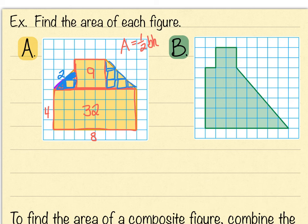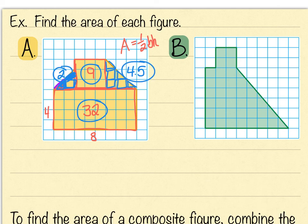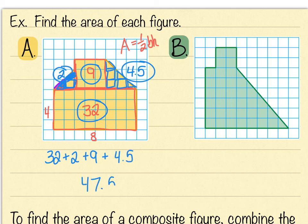Adding all the areas: 32 squares plus nine squares plus two more squares plus four and a half squares. So 32 plus 2 is 34, plus 9 is 43, plus 4.5 gives us 47.5 units squared.